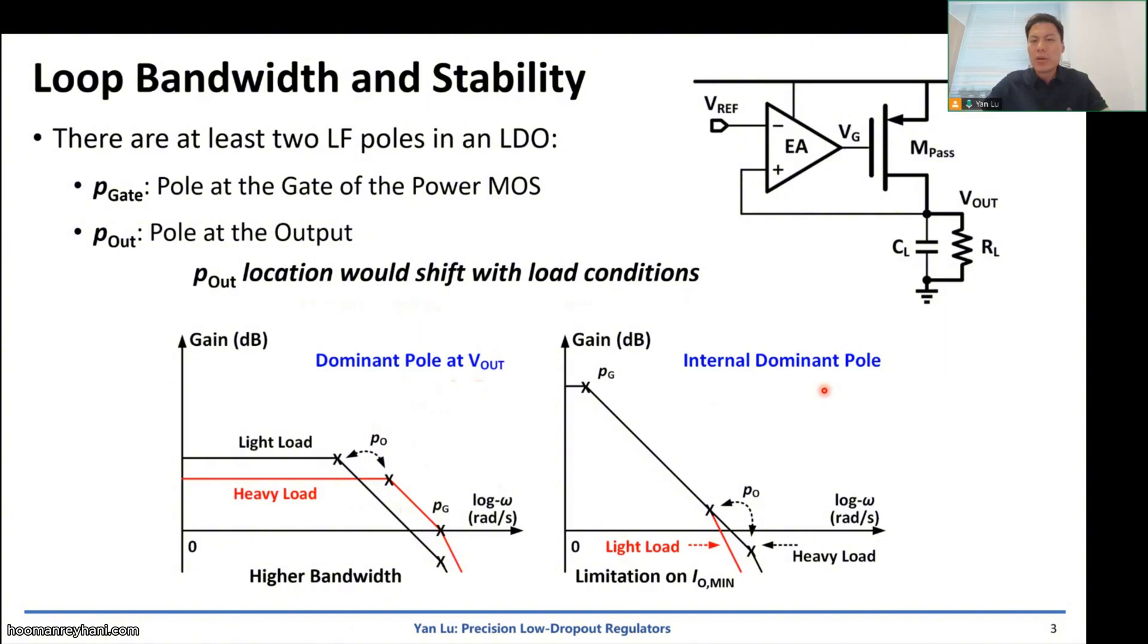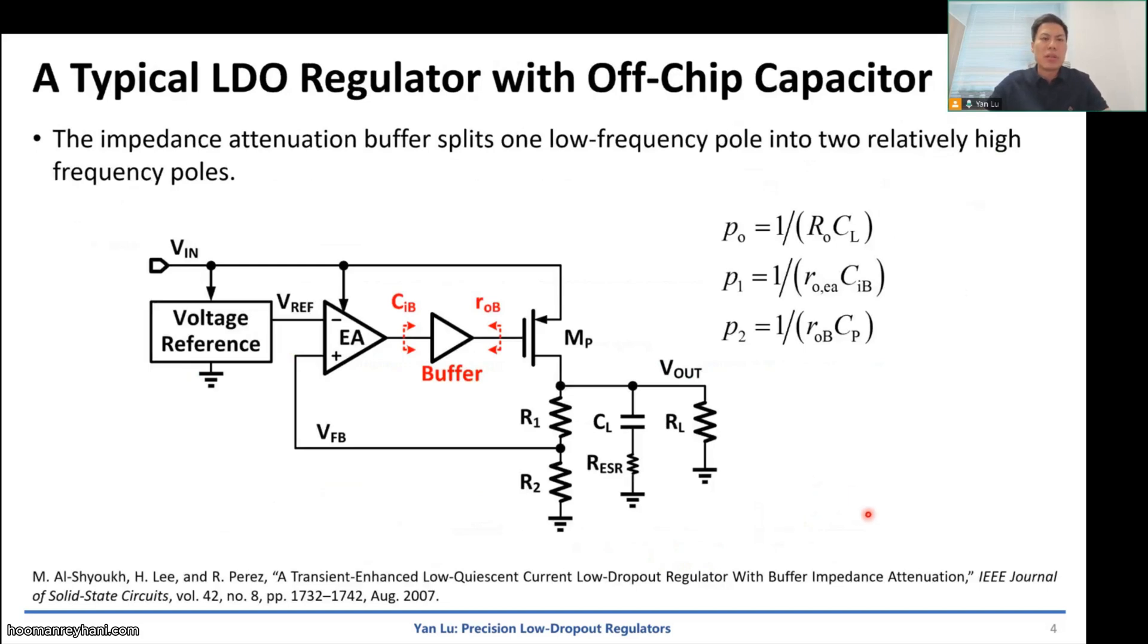If we have internal pole dominant case, we generate a relatively low frequency 3dB bandwidth pole. And then we need a high DC gain to extend the bandwidth. The stability, the worst case stability will happen at light load condition because at light load condition, we have a large resistance. The output pole will shift to low frequency. So for some LDOs in this case, we have limitations on minimum output current.